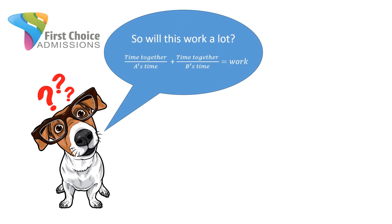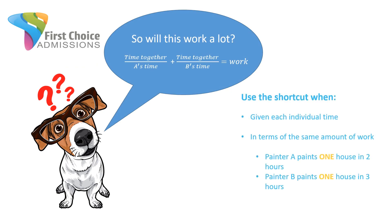It's not uncommon for the test to give you each individual's time, and the shortcut works when you have that. One caveat: you must be given each individual's time in terms of the same amount of work. For example, painter A paints one house in two hours, painter B paints one house in three hours. The shortcut doesn't work if one painter's time is given for half a house and another's for three-eighths. But almost always, the test gives individual times for the same amount of work, making the shortcut very useful.